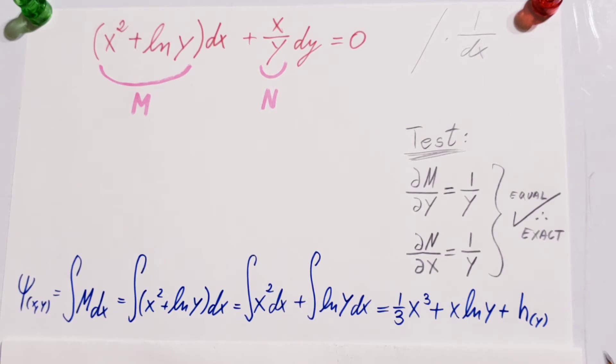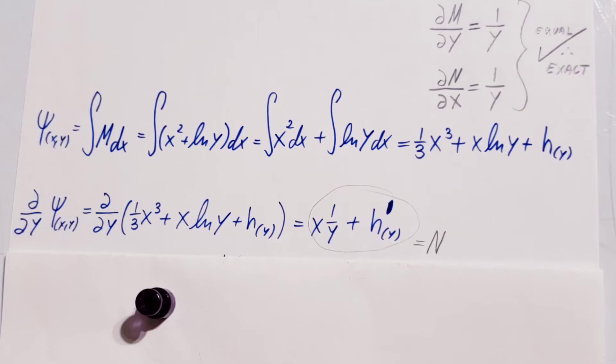Now, this is a function in terms of y, and that comes from, because we are taking an integral with only respect to x. Therefore, we will be having a term like this that's left over h in terms of y.